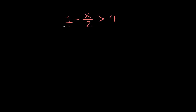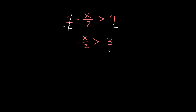So let's subtract 1 from this side, and what we do to one side we do to the other — so we'll subtract 1 on this side also. On this side, 1 minus 1 cancels out, and all we're left with is negative x over 2 is greater than 4 minus 1, which is equal to 3.